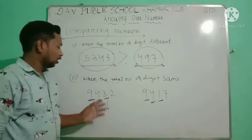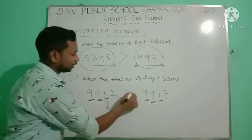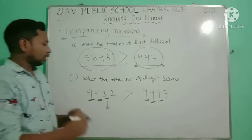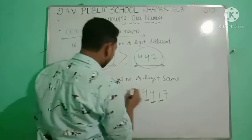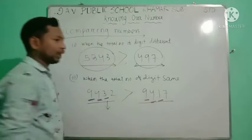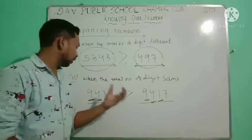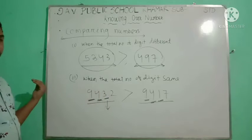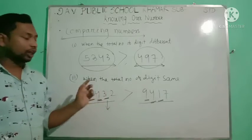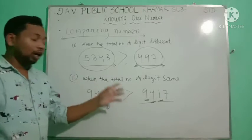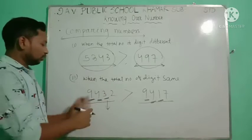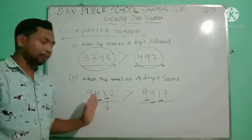If the number of digits is the same, then we look at the digits to determine which number is greater.